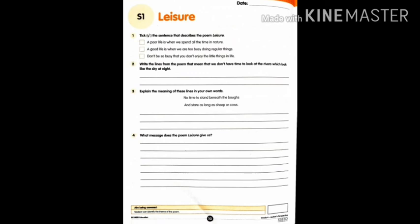Now read the three options carefully and take the correct one. Coming to the second question, write the lines from the poem that mean that we don't have time to look at rivers which look like the sky at night — you can write those two lines from the textbook. Third, explain the meaning of those lines in your own words. Fourth question: what message does the poem 'Leisure' give us? Based on the context, what did you understand about leisure and what message is the poem giving? Complete it and send through WhatsApp.